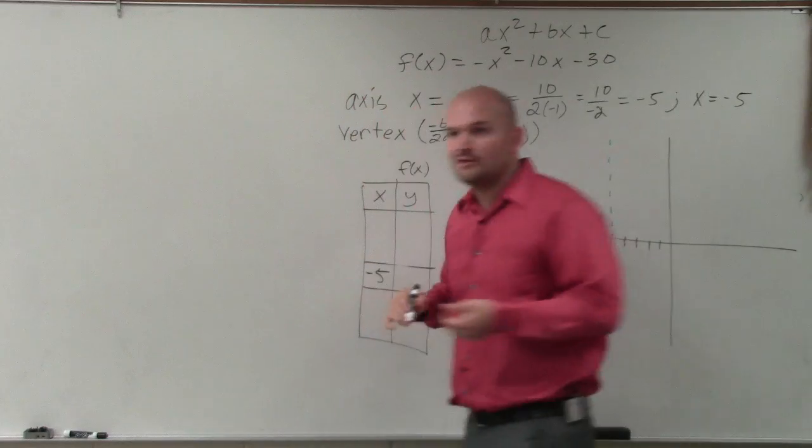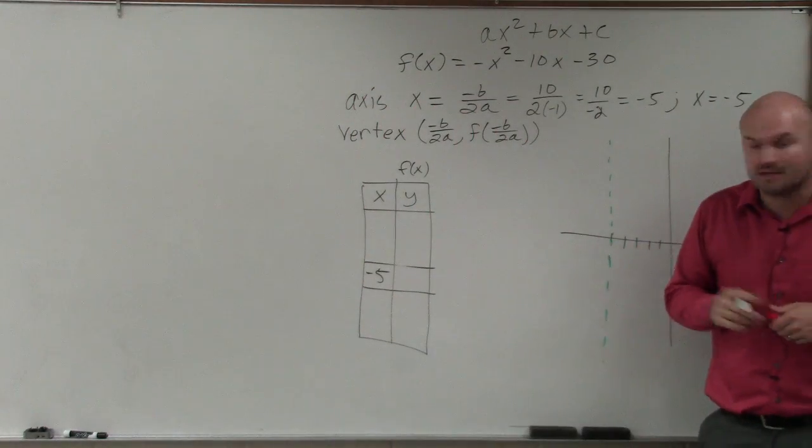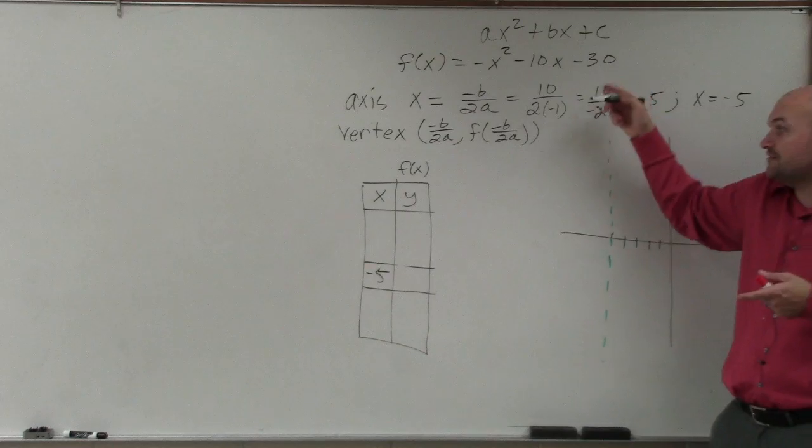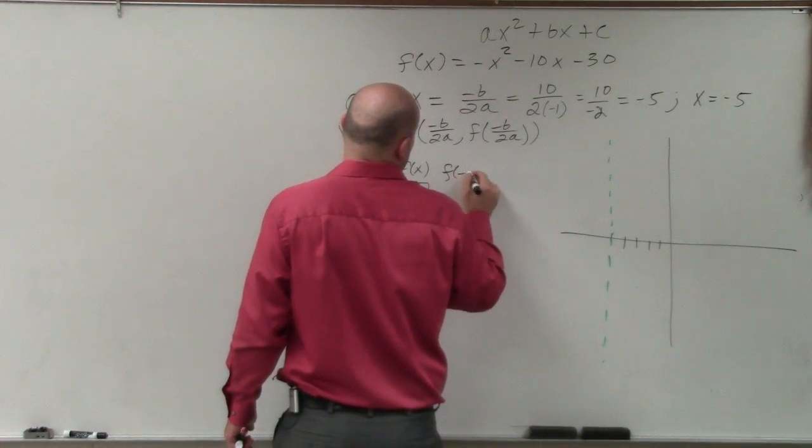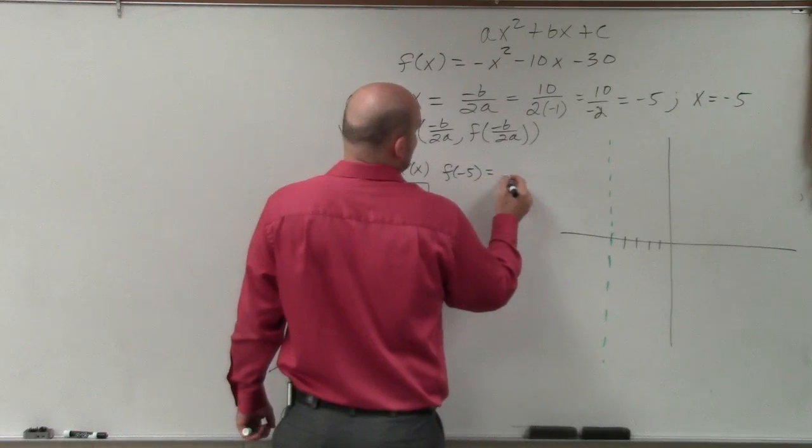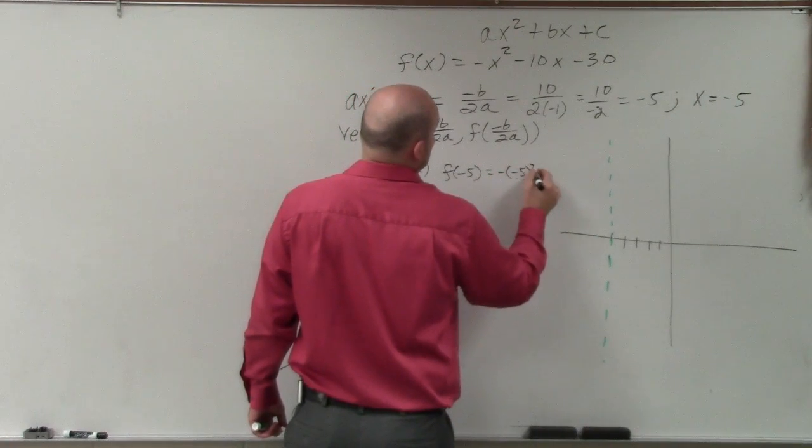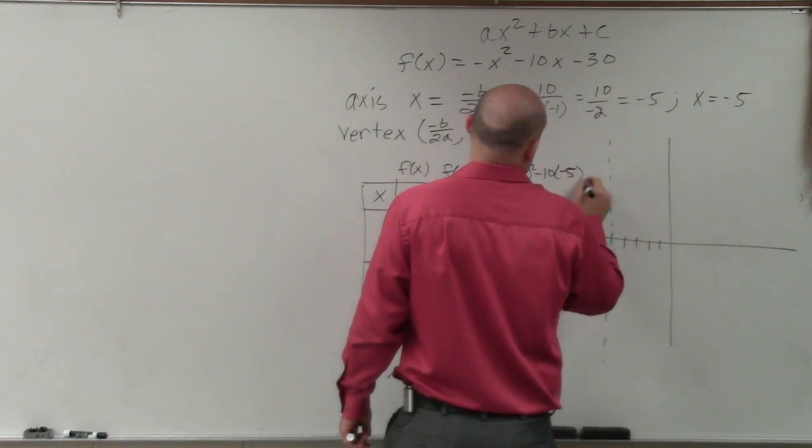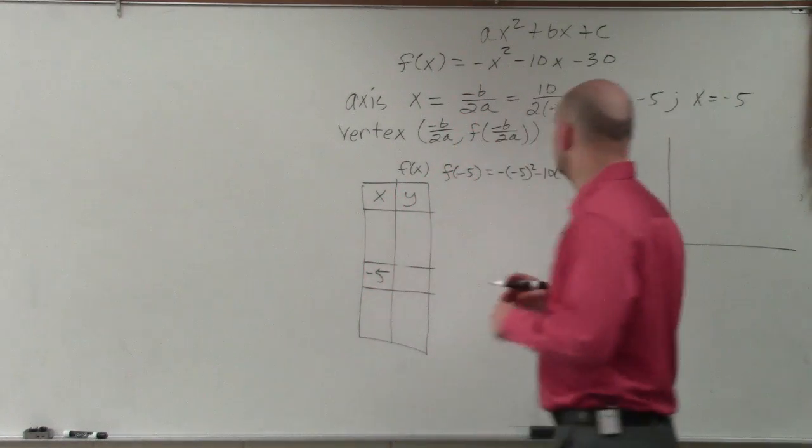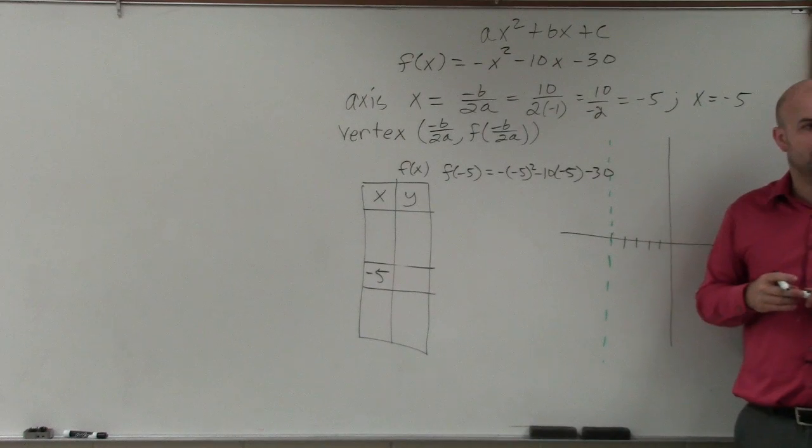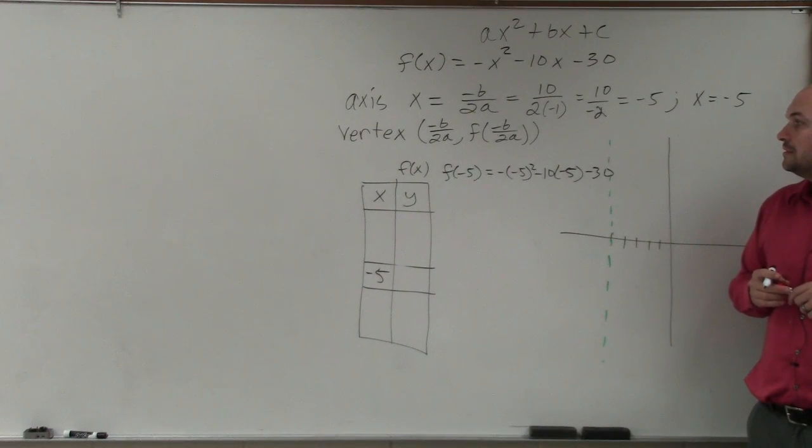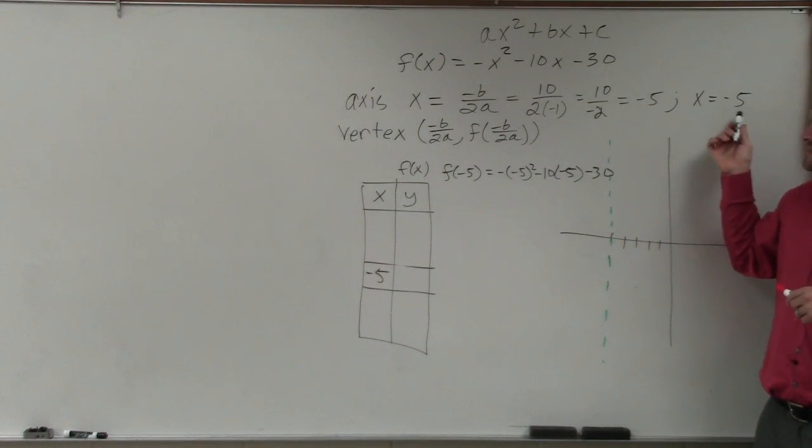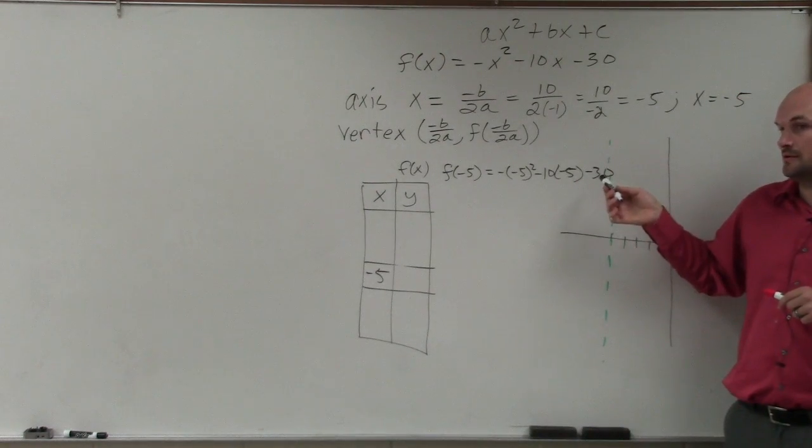In this case, since it's a function, we're using f of x instead of y. But basically, you just plug in negative 5 into your function. So if I do that, f of negative 5, which is basically the function notation for that, I get negative negative 5 squared minus 10 times negative 5 minus 30. x equals negative 5. So I'm plugging in negative 5 in for x.